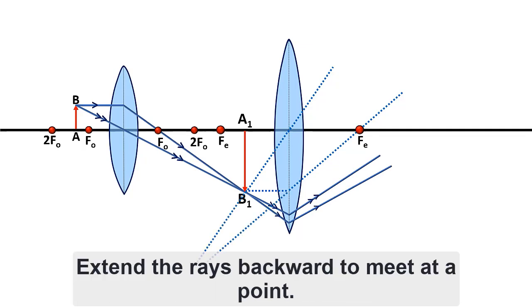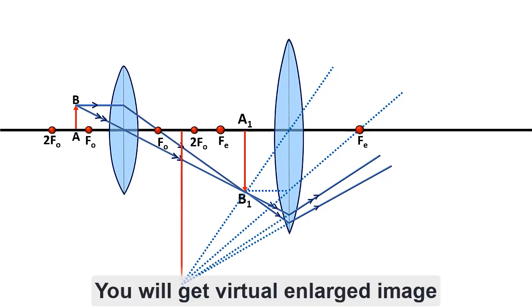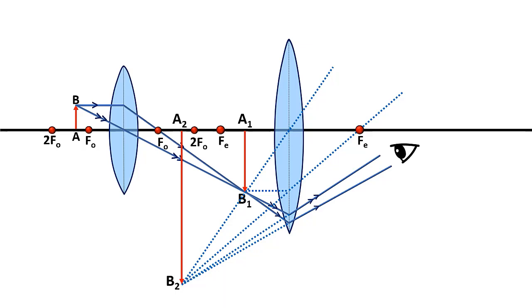Extend the rays backward to meet at a point. You will get a virtual large image. The image is inverted with respect to the object.